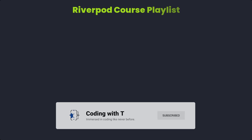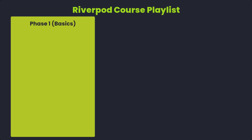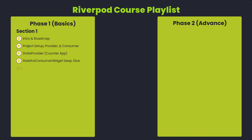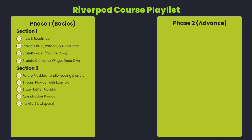Now let's look at the course playlist, which is divided into two phases. Phase one covers manual providers and consumers, split into three sections. Section one covers core providers: this intro/roadmap video, then Provider (read-only), StateProvider (mutable state), and StatefulConsumerWidget deep dive. Section two covers asynchronous programming and modifiers: FutureProvider, StreamProvider, the .family modifier, and auto dispose. Section three covers computed and derived states, performance with the .select approach, overrides, and testing.